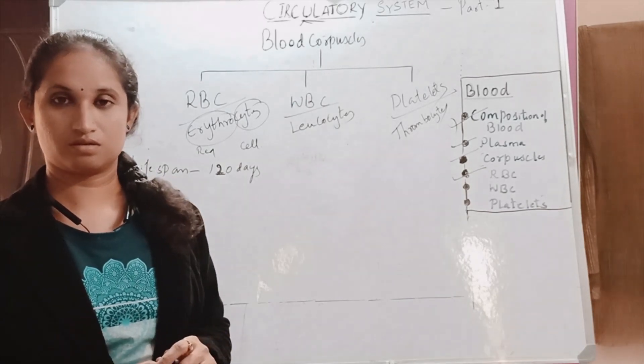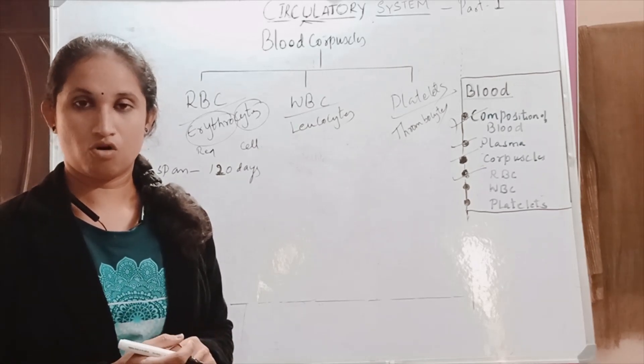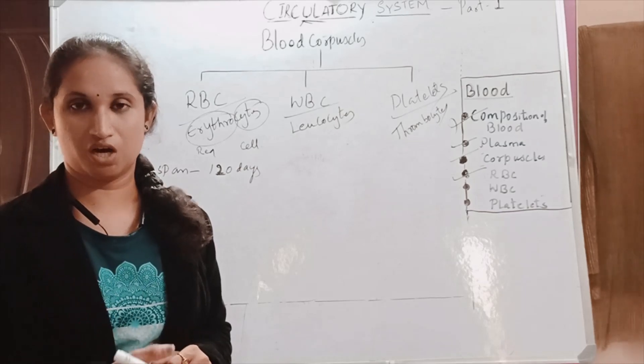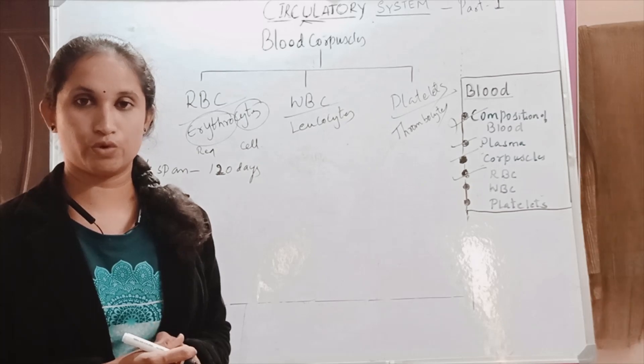So what is this destroyed? That is, RBC cells will be disintegrated or will be broken down into the bile pigments, that is biliverdin and bilirubin.